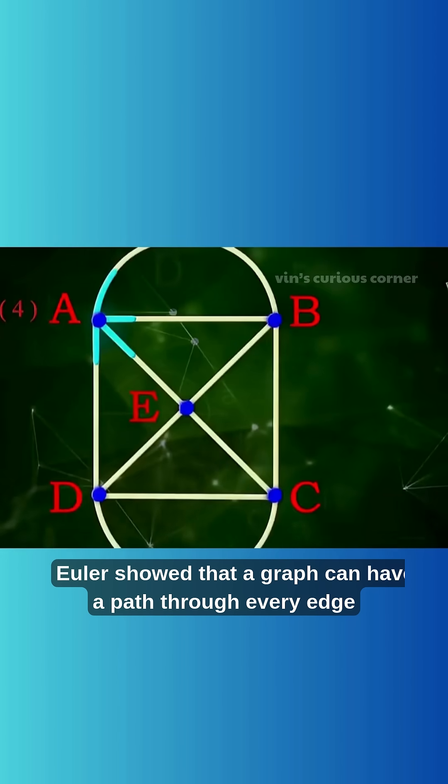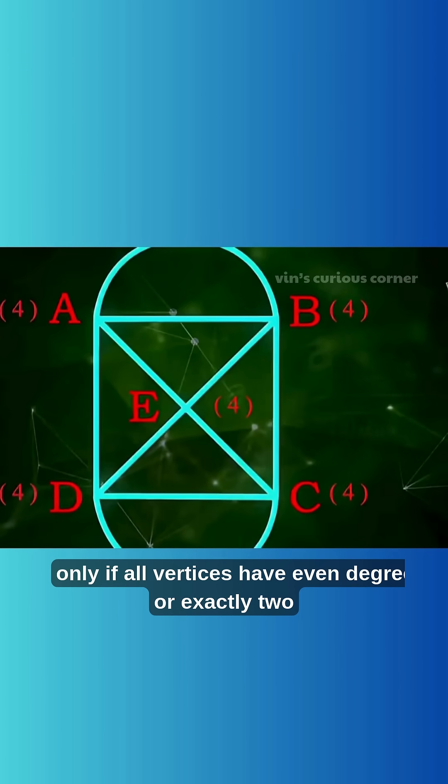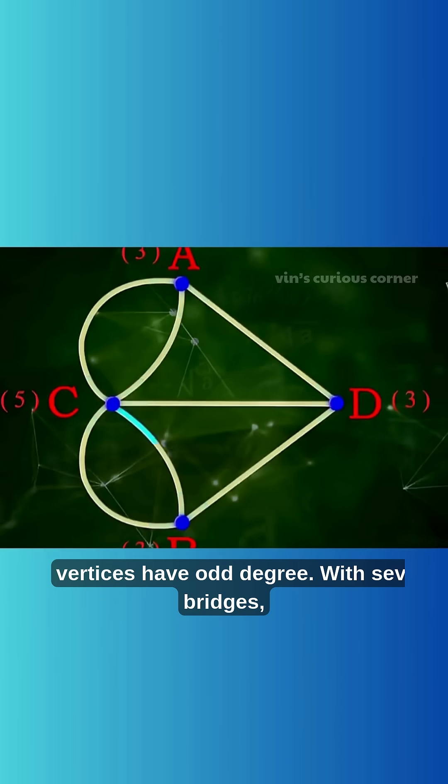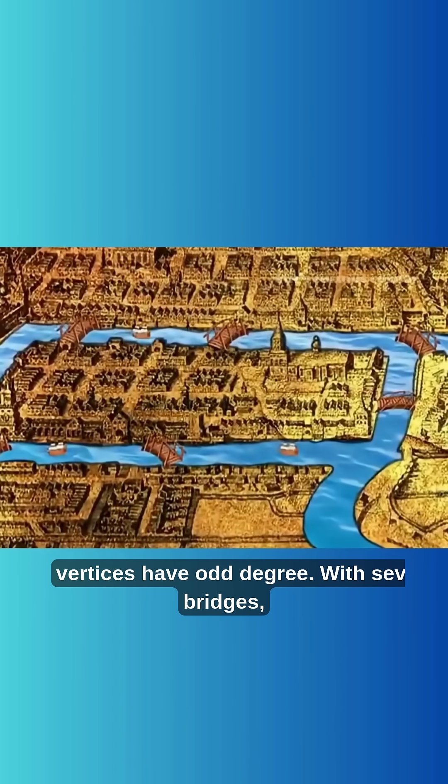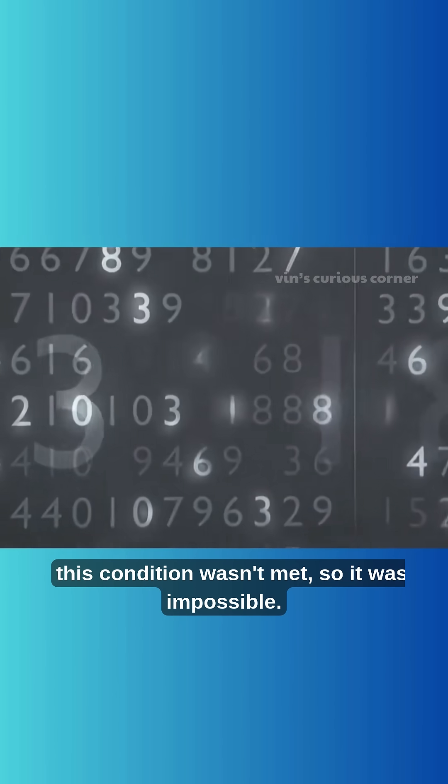Euler showed that a graph can have a path through every edge only if all vertices have even degree or exactly two vertices have odd degree. With seven bridges, this condition wasn't met, so it was impossible.